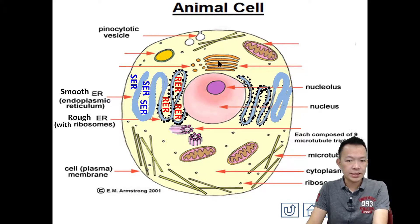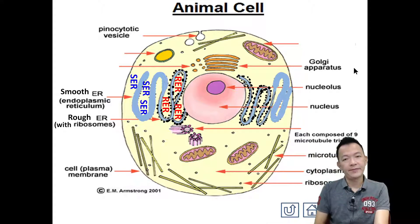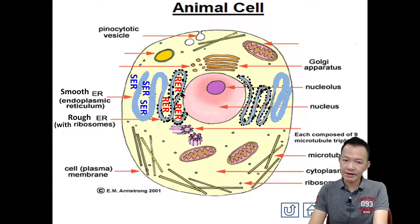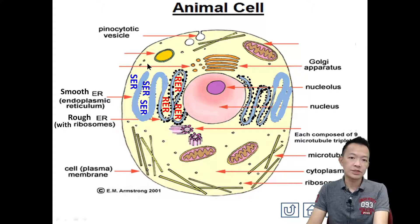Somewhere very close to the rough endoplasmic reticulum, and between the structures - there are a lot of small granular things. 这一个细胞器就叫Golgi apparatus. 很靠近rough endoplasmic reticulum，然后之间呢，rough endoplasmic reticulum跟它之间有一粒一粒的东西，它的名字就叫Golgi apparatus. And the small pieces between them are called transport vesicle.